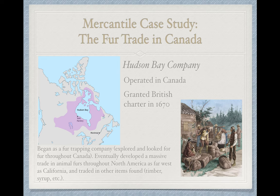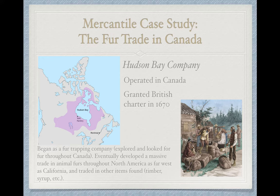A really good example of a mercantile business was the Hudson Bay Company, which operated in Canada. It was a British charter starting in about the year 1670, and its main purpose was to find animal fur across Canada. This business relied on people exploring huge, dense forests in Canada, hunting animals, processing them, and selling them back to Europeans and Americans to make winter clothing, hats, or shoes. Most of Europe and the United States got really cold in the winter, so they needed these furs to keep warm.